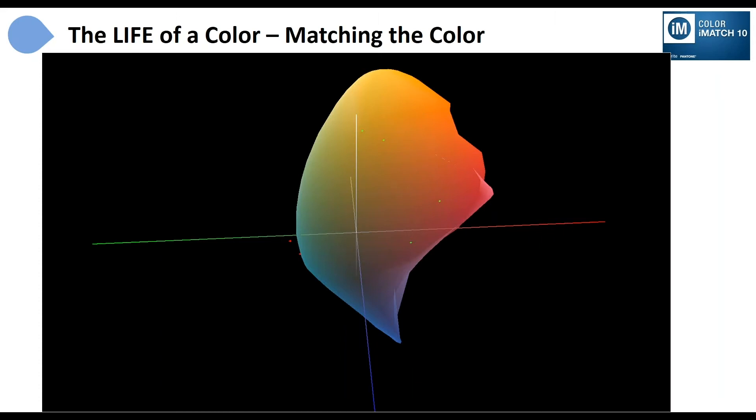So that kind of strangely shaped mass of color that you see represents all of the colors that could be produced by the set of colorants and the resin that I selected. And you can see that four of those colors have green dots because they're inside the gamut, meaning I can make those colors. Those I could match those standards with my set of colorants because I can make anything inside of that blob.